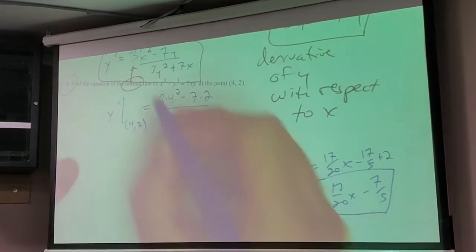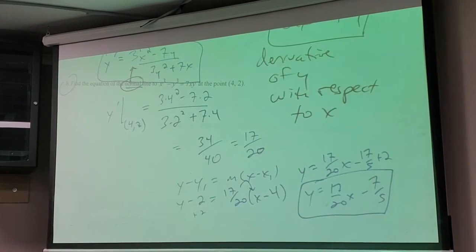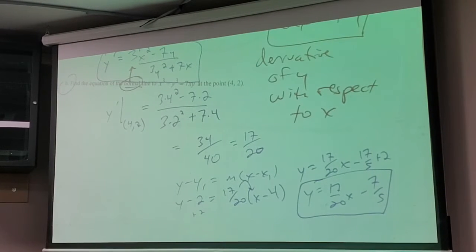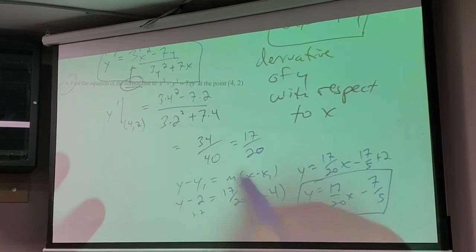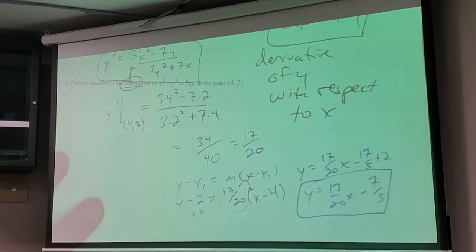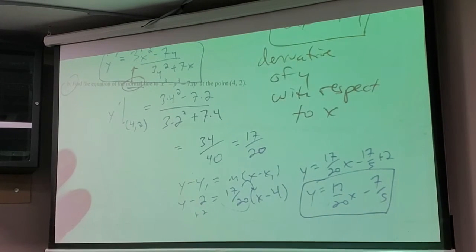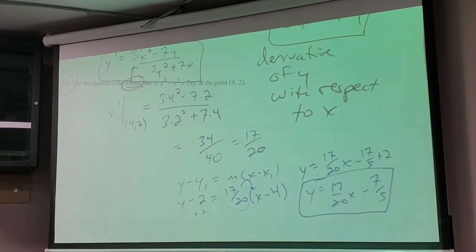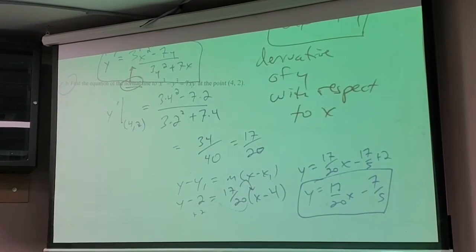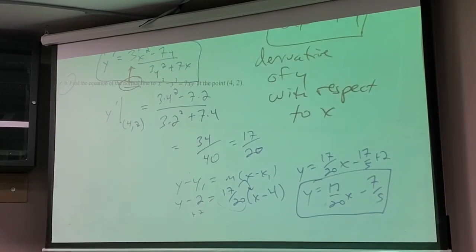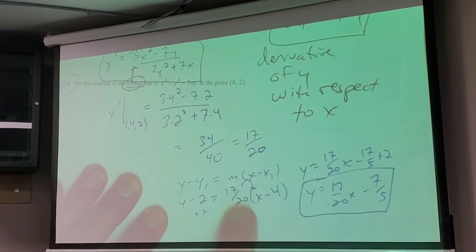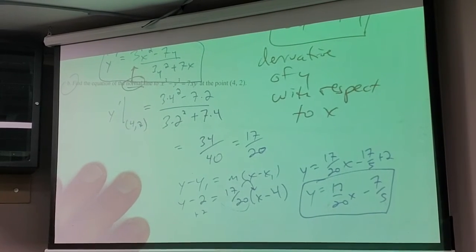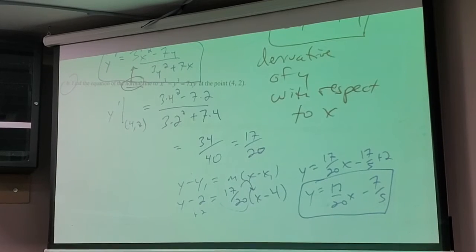The normal line — can somebody remember what the normal line was? Perpendicular. So I would do all the same work except the slope I would put in here would be negative 20 over 17. Then just do all the same work — it's just going to be a little grosser because the bottom is 17, so it won't be as pretty, but it's all the same process.